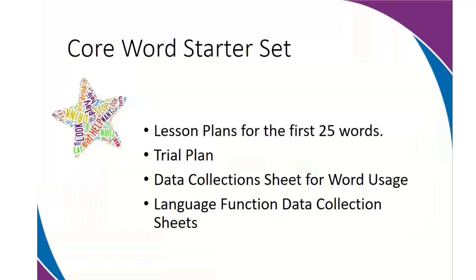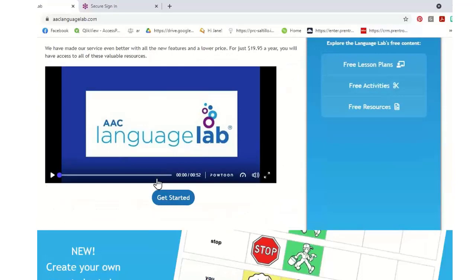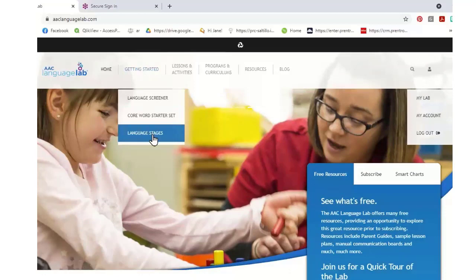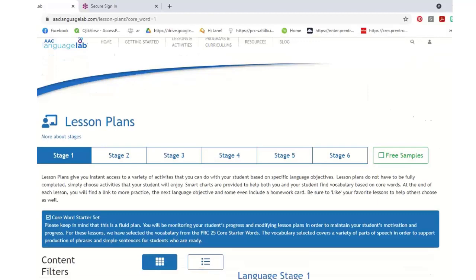Where I like to get started is the core word starter set. This is a lesson plan based on 25 words that we at PRC Saltillo think are most frequently learned first. We've done all the research and put these lesson plans on the site. Coming to the Language Lab home screen, we have a getting started section where you can find information on language stages and the core word starter set of lesson plans. All of these lesson plans are free.